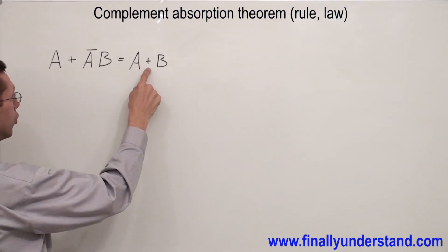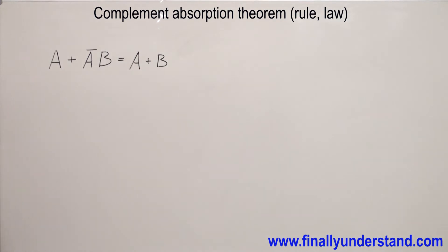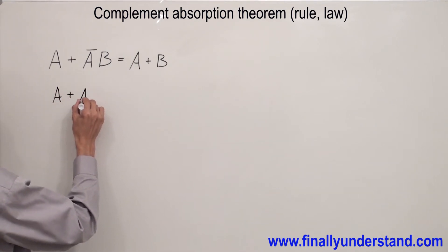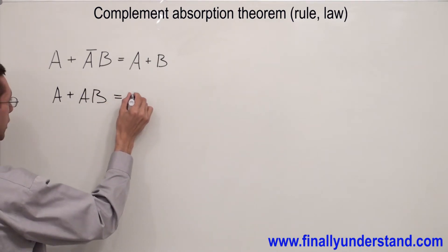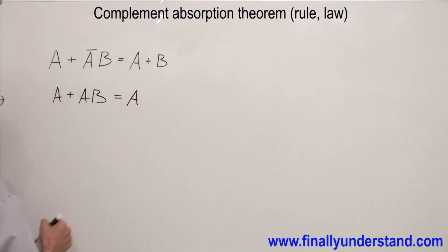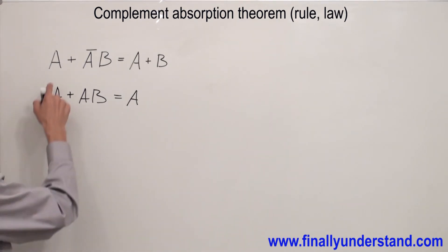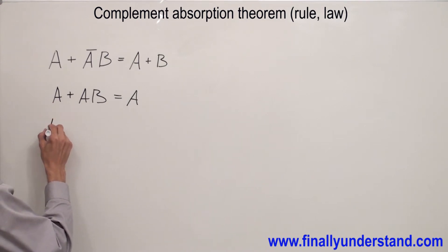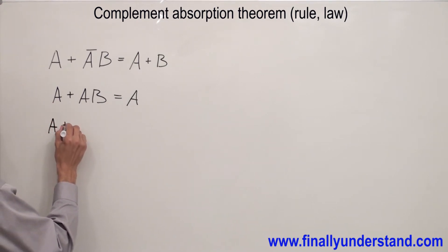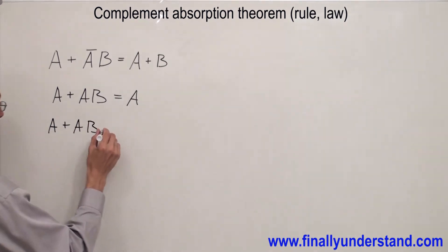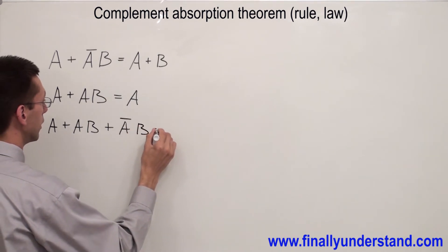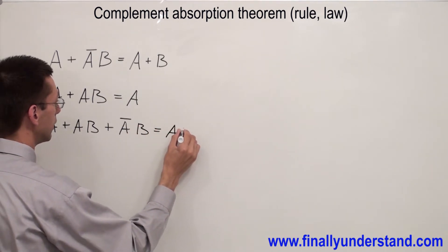That's why the answer is A or B. Someone can ask, how come? You have to remember the Absorption Theorem, which says that A or AB is equal to A. So what I'm going to do right now is simply replace this A by these two terms. That's why I'm going to have A or AB or A'B has to be equal to A or B.